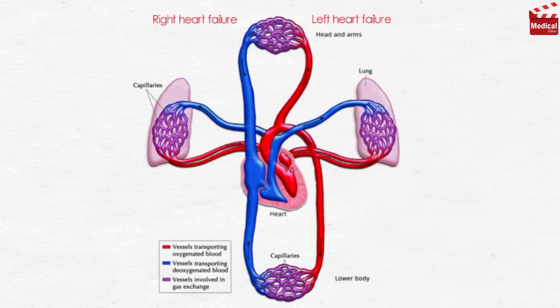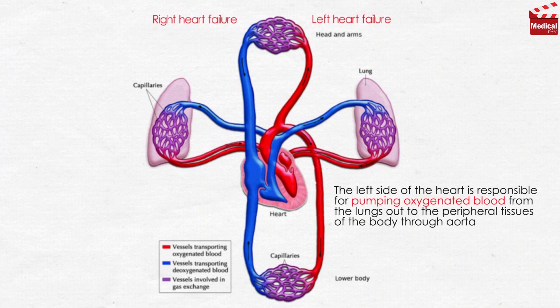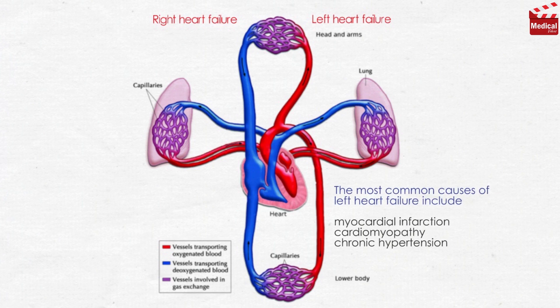As we know from the CVS introduction lecture, the left side of the heart is responsible for pumping oxygenated blood from the lungs to the peripheral tissues of the body. The most common causes of left heart failure include myocardial infarction, cardiomyopathy, and chronic hypertension.